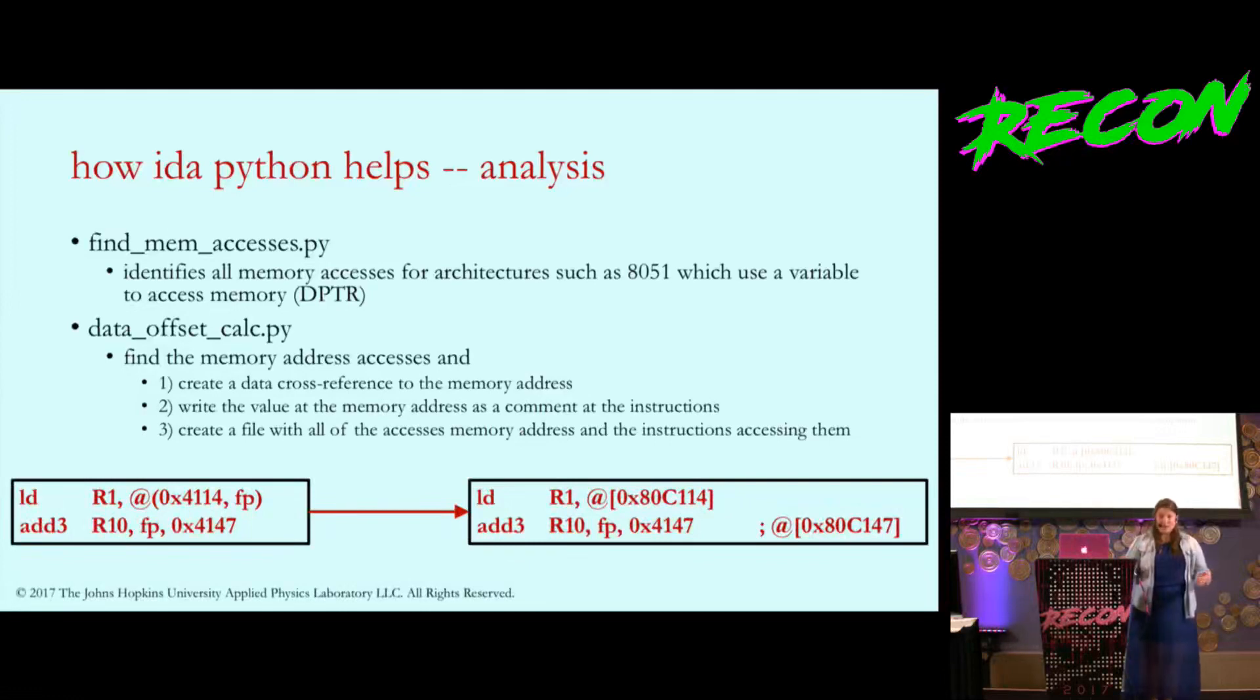But you can't see what code is talking to each other and what values they're using. This script uses regular expressions to find all these indirect offset accesses to that variable. It resolves the address, pulls in the actual value if it's read-only memory, and creates bi-directional data pointers. Now you know when everyone cares about this value or three different places are writing to this access.